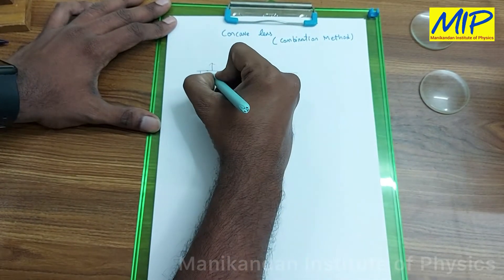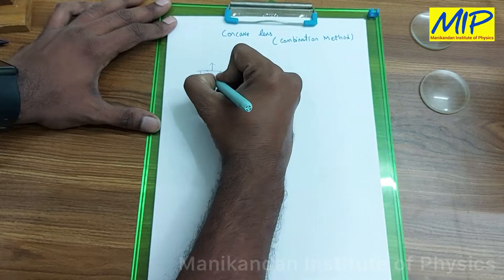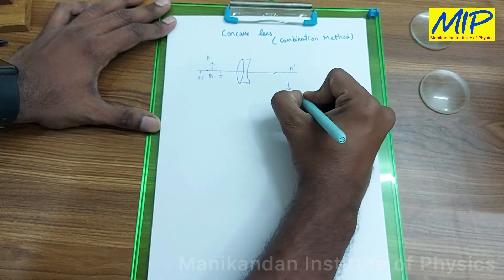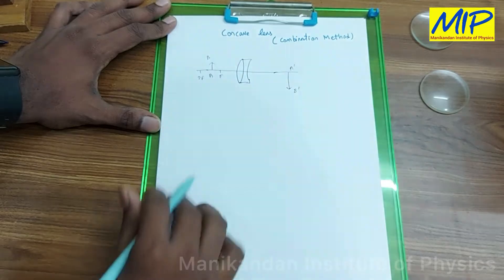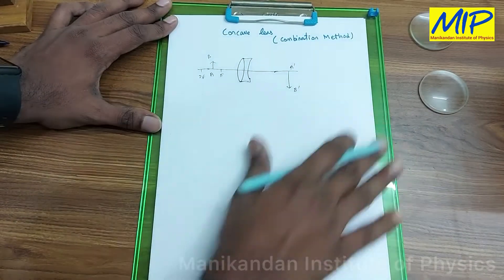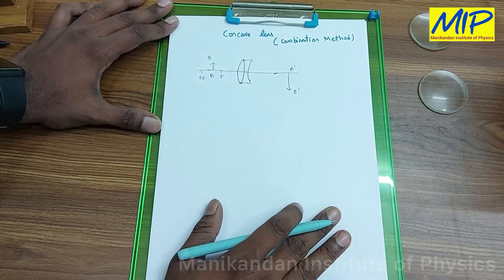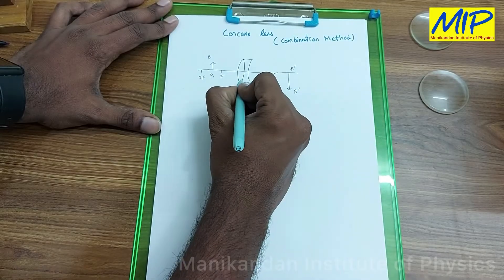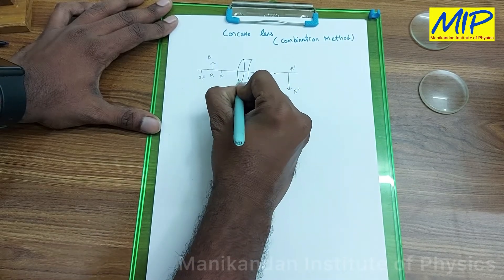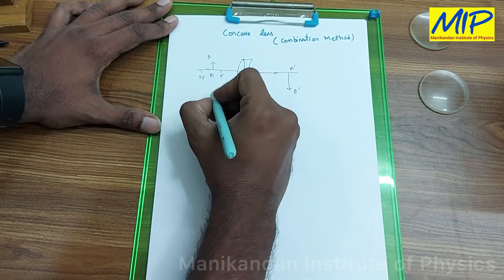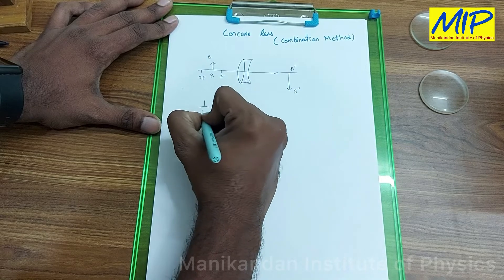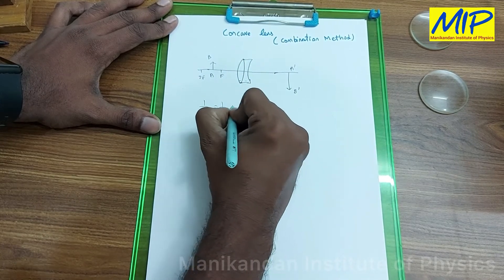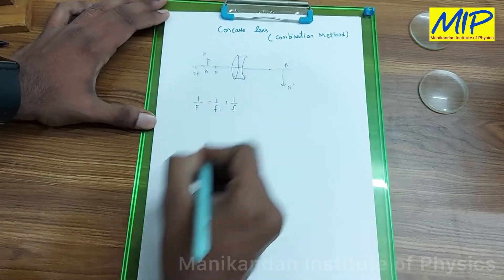This image is real and inverted. This is my A and B, and this is A-dash and B-dash. My image is formed at this particular point. Now I am going to write the focal length of the combined system: 1 over F equals 1 over F1 plus 1 over f.